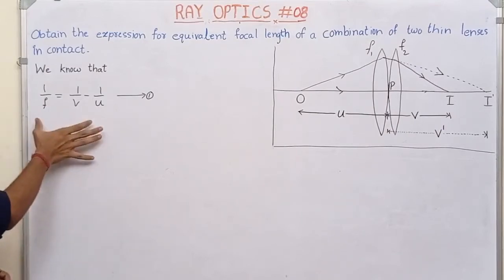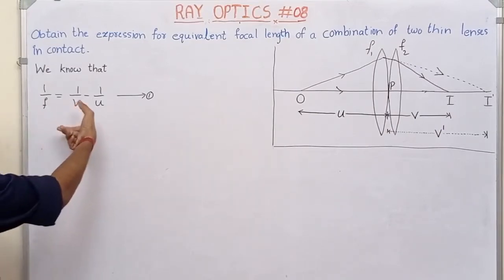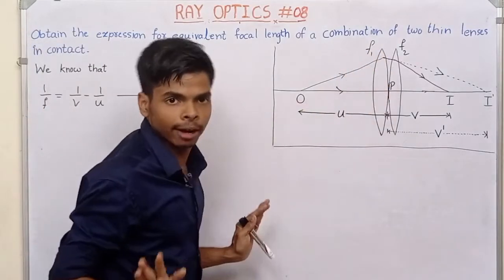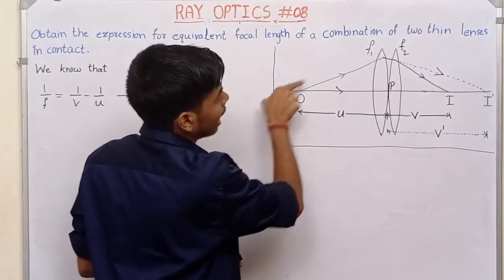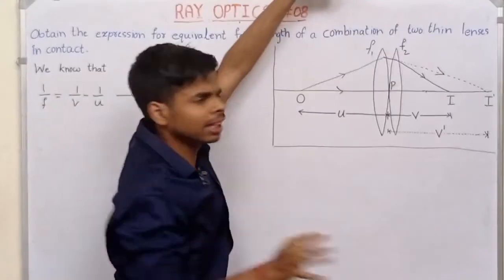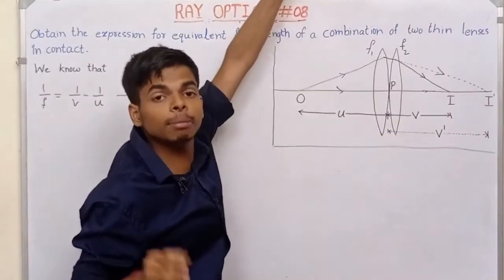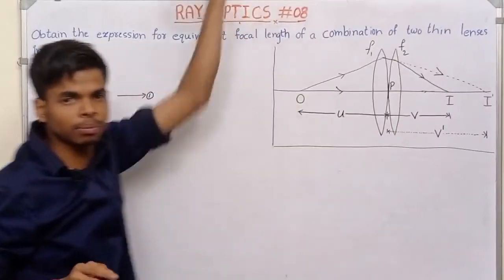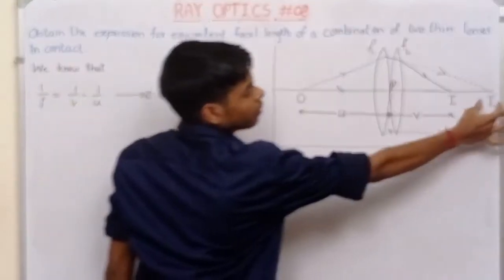This is the thin lens formula. The thin lens formula is applied to the base lens — just one, the base lens. The image will form at a certain position, image distance is v-dash.